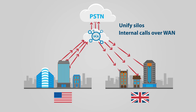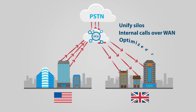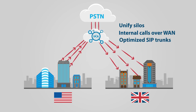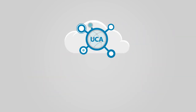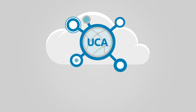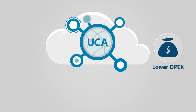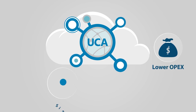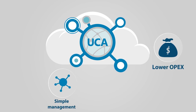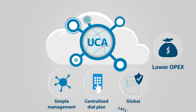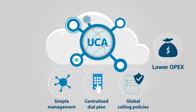UCA reduces costs by routing internal calls over the enterprise WAN and optimizing SIP trunk connections. In addition, OPEX is reduced by centralizing and simplifying management of the voice network, dial plan, and calling policies.